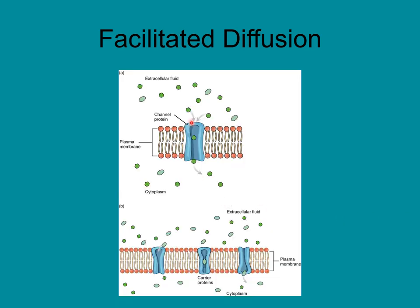Here's an example: a channel protein — a transport protein — allows substances to move from high concentration to low concentration across the membrane. The substances can't go directly through the phospholipids because they're hydrophobic, while the substances are hydrophilic. They don't mix.